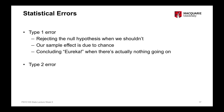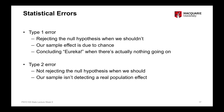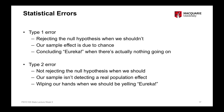The opposite is called a type 2 error — not rejecting the null hypothesis when we actually should. So not concluding support for the alternate hypothesis when actually an effect does exist in the population. In this instance, our sample isn't detecting a real effect that exists in the population. That would be like wiping your hands and saying there's nothing going on, when we should be saying 'Eureka, there is an effect here.'